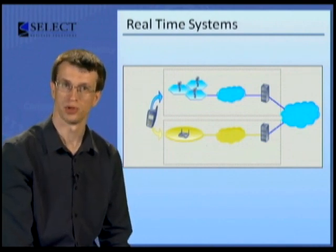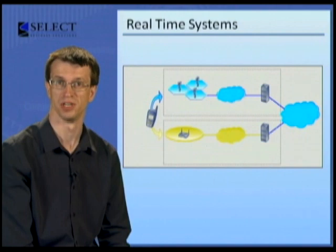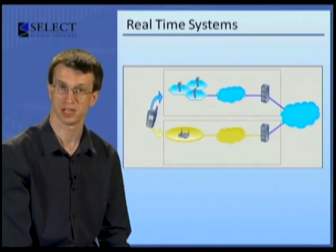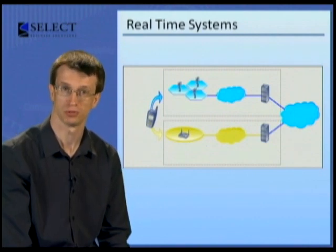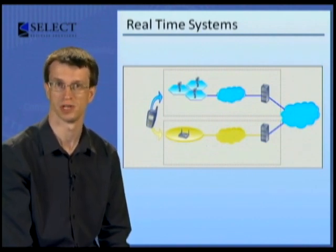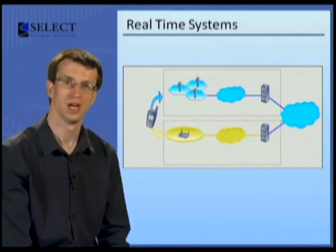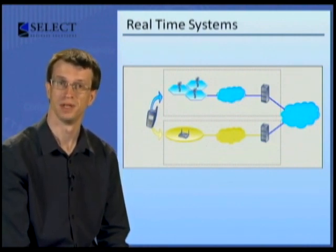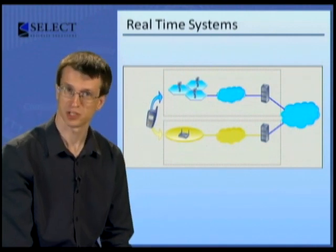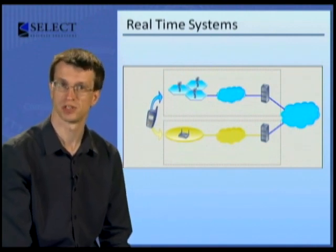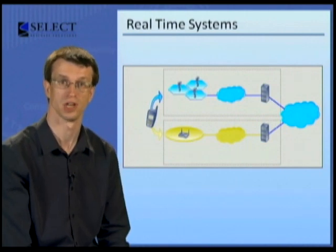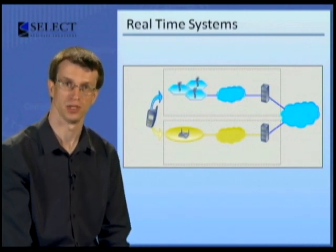One example is the telecommunications industry, where business support systems integrate with real-time network systems as part of an order fulfilment process to add subscribers and activate services for those subscribers — for instance, voice, data and BlackBerry. In turn, the network systems provide service usage information to the business systems to support processes like billing and subscriber usage.